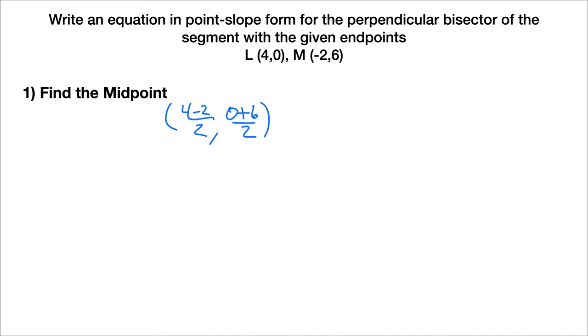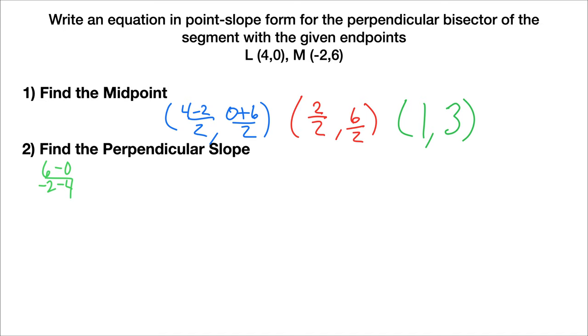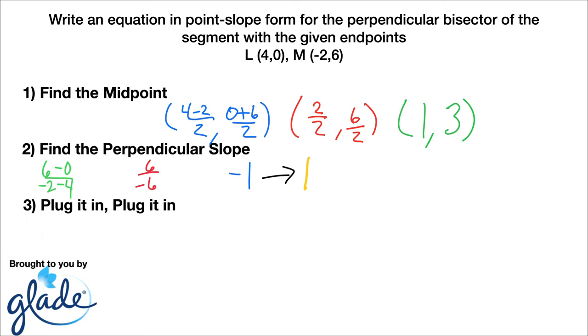So the first thing we have to do with any two points is we find the midpoint. So, 4 minus 2 over 2, 0 plus 6 over 2. Because remember, we're adding our x's, adding our y's, and one of our x's was negative, which is why it looked like a minus. So then 4 minus 2 is 2, 0 plus 6 is 6. So 2 over 2 is 1, 6 over 2 is 3. Alright, now let's find the perpendicular slope. That's y2 minus y1 over x2 minus x1, so 6 minus 0 over negative 2 minus 4. That becomes 6 over negative 6, which is a slope of negative 1, which turns into positive 1 when we make it perpendicular. And our final step is, of course, to plug it in. That's right, and so we just go y minus the y value in our midpoint, or y minus 3 is equal to 1 times x minus 1, or y minus 3 equals x minus 1.